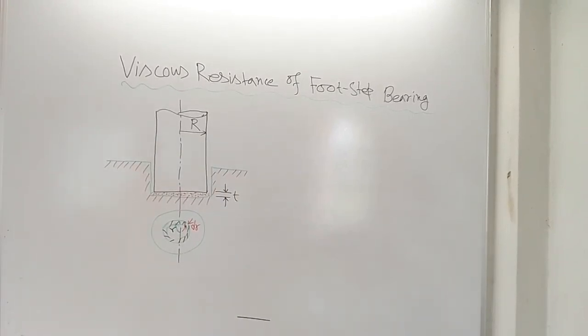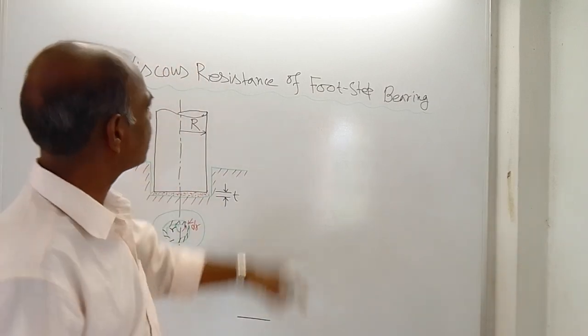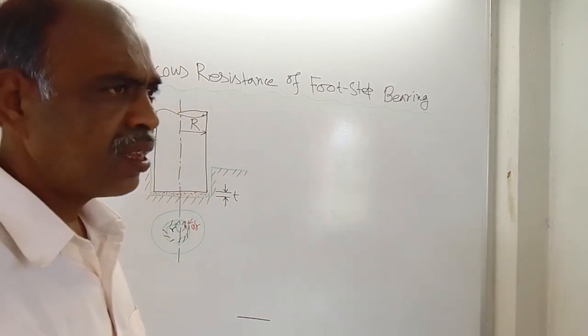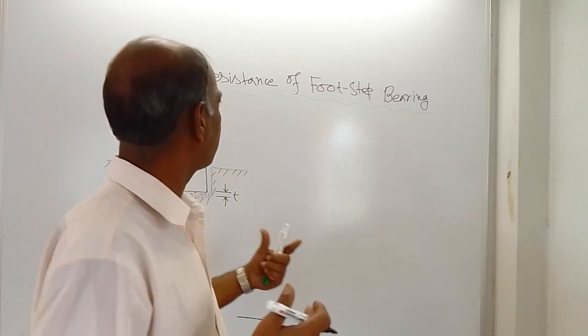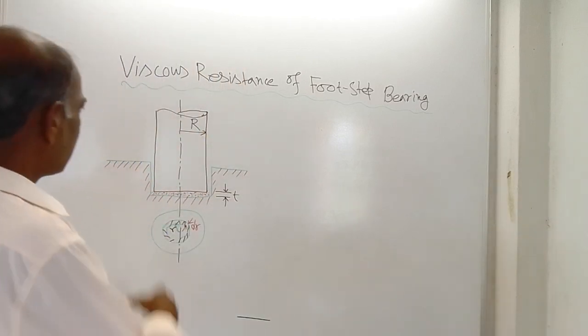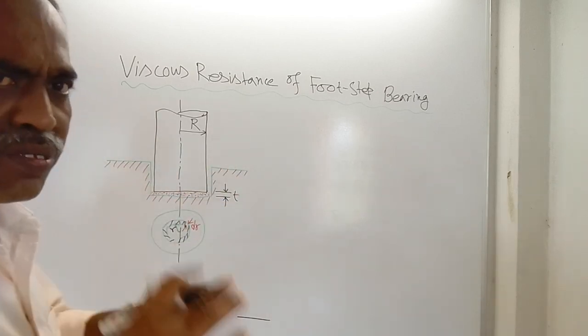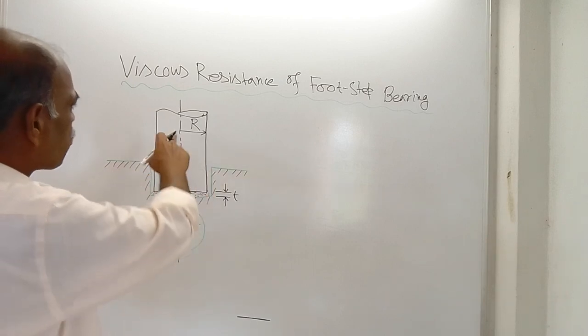Good morning. Here I have come with this topic. This is not a new topic. This is viscous resistance of footstep bearing. In the last class you have seen the viscous resistance of general bearing, and this is footstep bearing. The green line represents footstep bearing. This is the shaft of radius r.